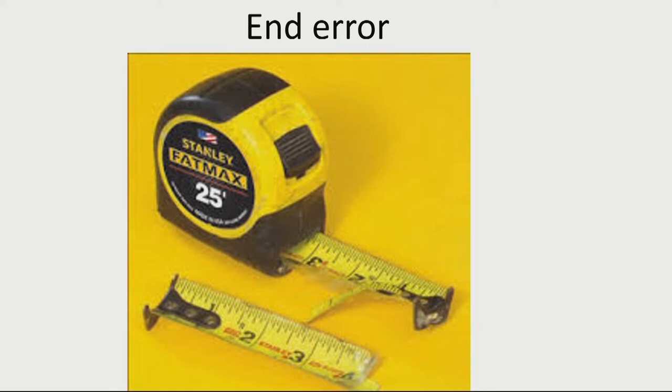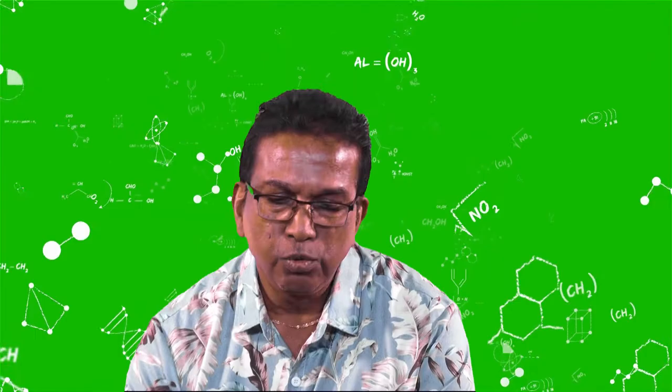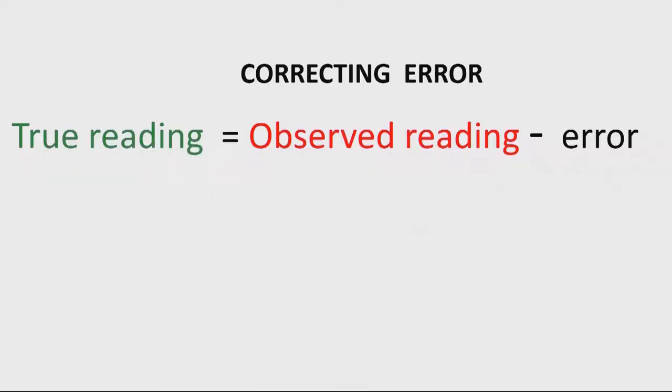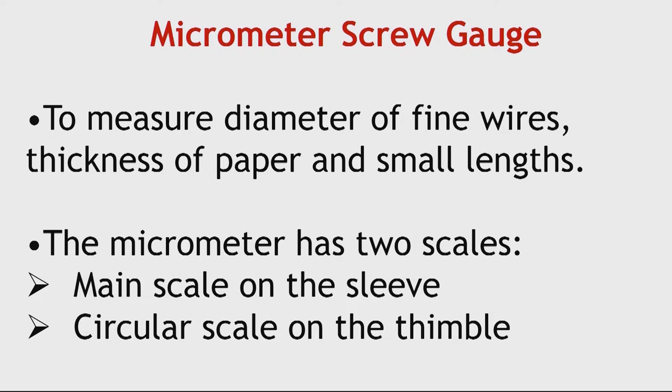And also, certain measuring instruments, they are damaged at the very beginning or at the very end. And therefore, you cannot use, but still you can be using it. But then, since you will not be starting on zero, then you will minus your error from the end result. So, you use this formula. For a true reading, you take your observed reading, what you are reading, and you minus the error, which is logic. And then you will get your true reading.